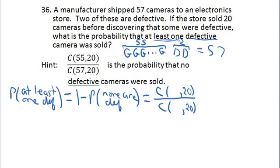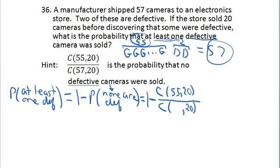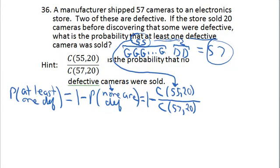Up top, you want no defectives, so they've got to come from the 55 good ones. Down in the denominator, it doesn't matter if they're defective or not, so you're drawing them from all 57. When you're looking for no defectives, they must come from the 55 good ones. When calculating the total number of ways to draw any 20, you use 57.